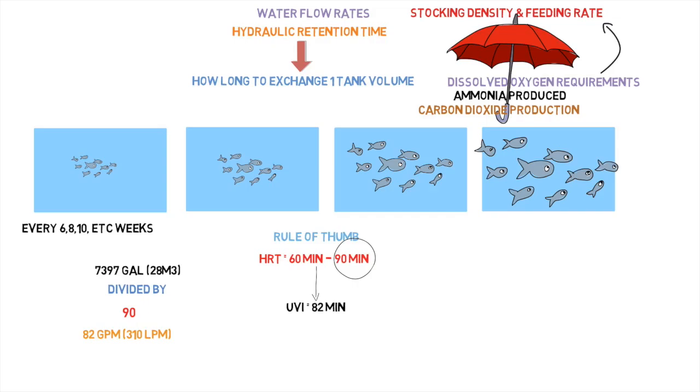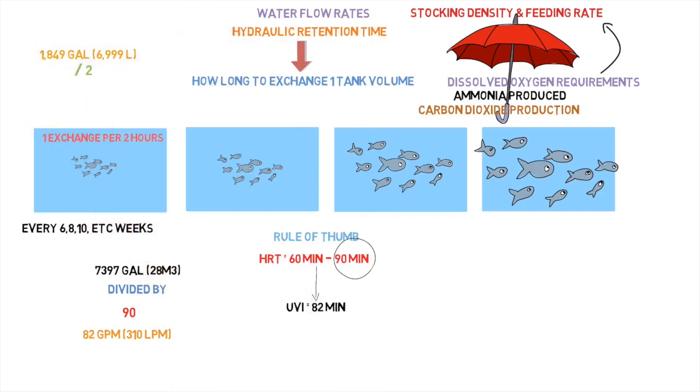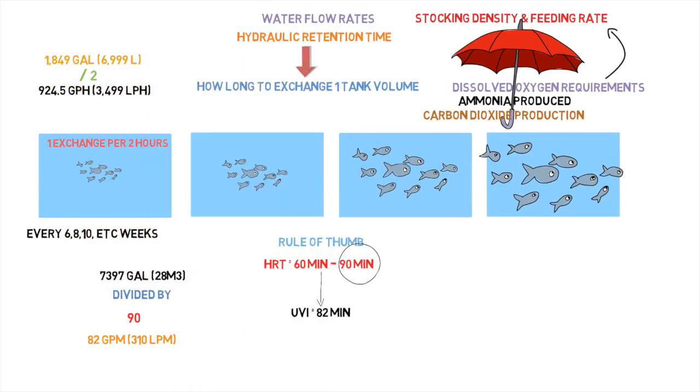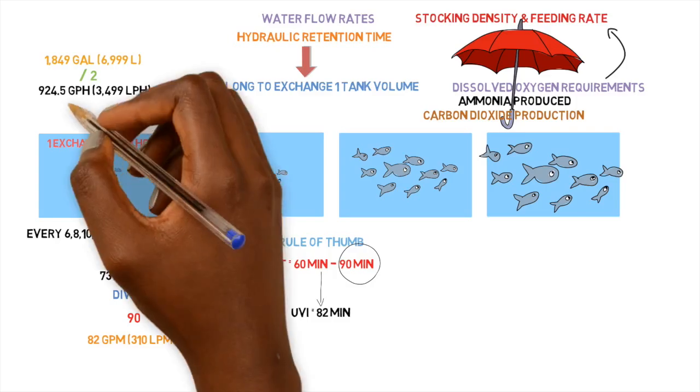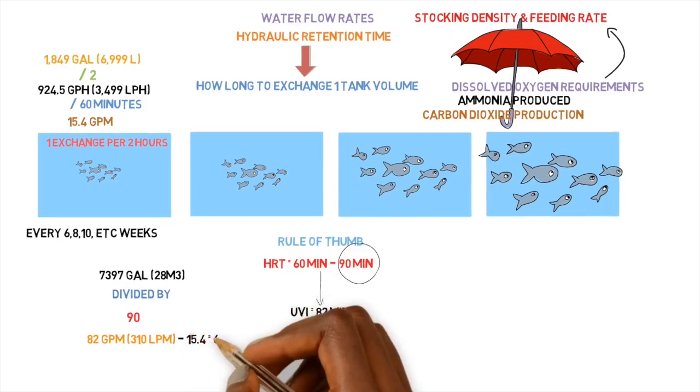For example, we have the tank with the smallest stocking density, the first tank. We're going to recirculate this tank every two hours. So what this means is we need to find out how much water volume is in this tank, which is 1,849 gallons, and divide that by two. That'll give us 924.5 gallons that needs to be put inside of this system. So we can just divide that by 60 to give us how much gallons per minute that is. And that'll give us 15.4 gallons per minute.